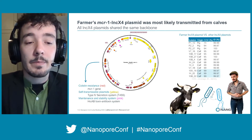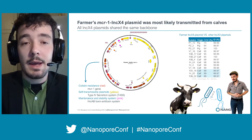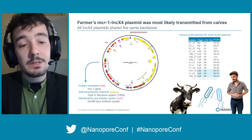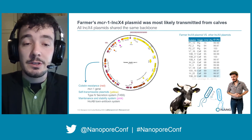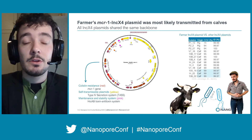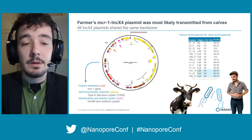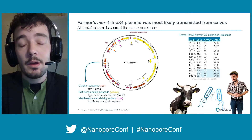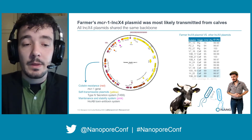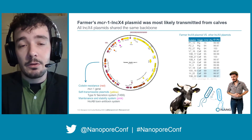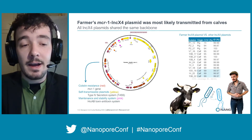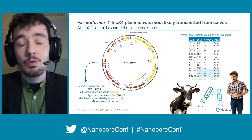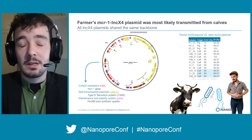INC-X4 plasmids were the most abundant carrying the MCR1 gene. All these plasmids share the same backbone, which mainly consisted of the colistin resistance gene, a type 4 secretion system that allowed self-transmission, and a HokB toxin-antitoxin system for maintenance and stability. The size of these plasmids ranged from 33,000 to 35,000 base pairs. The most different INC-X4 plasmid was from a pig isolate — its size was 45,000 base pairs, and the main difference was an insertion of 12,000 base pairs which encoded for tetracycline resistance.